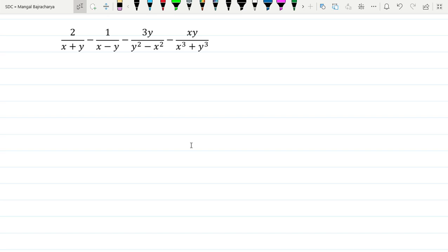Okay, the question is to simplify: 2/(x+y) minus 1/(x-y) minus 3y divided by y²-x² minus xy divided by x³+y³. So this simplification is going to be simplified.